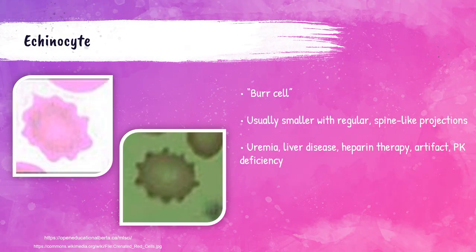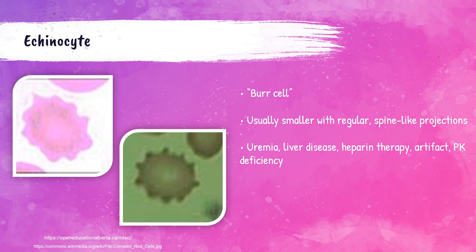These are called echinocytes, also referred to as burr cells. They have evenly spaced spine-like projections, as you can see in the pictures. These can be seen in patients with uremia — when the kidneys are not working appropriately to filter out waste products from the blood. They can also be seen in patients receiving heparin therapy, which is given to prevent blood clots, and in patients with pyruvate kinase (PK) deficiency, which is a genetic disorder. Echinocytes can also appear as artifact on the slide, meaning it happens when the blood smear is made manually.